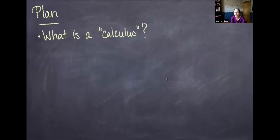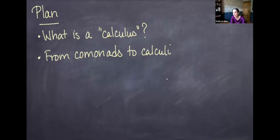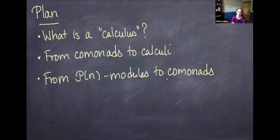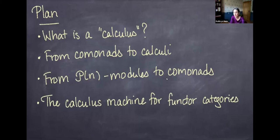The first part of the talk is: what is a calculus? What is a possible definition of what we mean by a calculus? Then how we can go from comonads to calculi — how a tower of comonads gives us a calculus. Then, if comonads give us calculi, what gives us comonads? A good way to create comonads is to start with modules over Pn, where Pn is the poset of subsets of the numbers from one to n. And then we'll specialize to how this gives us a machine for producing calculi on functor categories.